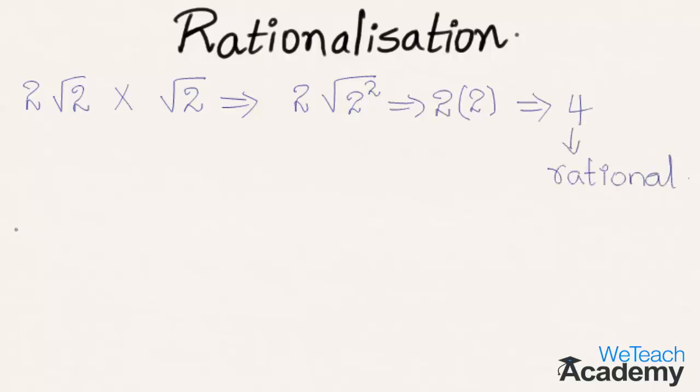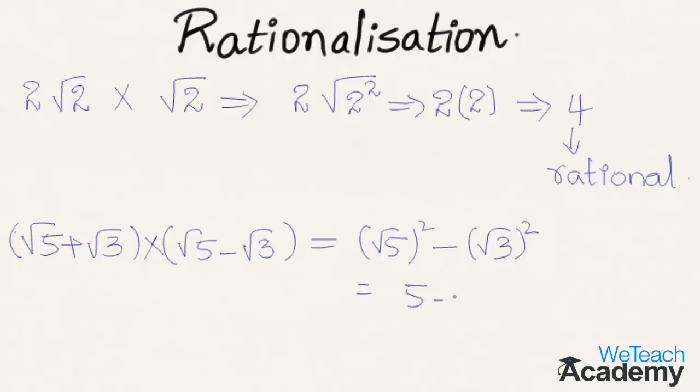Now let us consider two more surds: root 5 plus root 3 and root 5 minus root 3, and multiply them. By multiplying we get root 5 whole square minus root 3 whole square. Applying the law of nth root of a power n equals a, we get 5 minus 3, that is 2, which is a rational number.